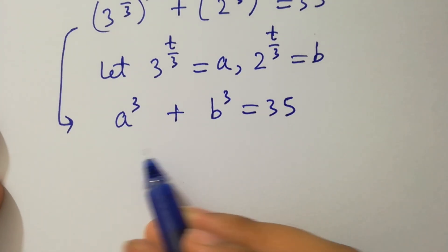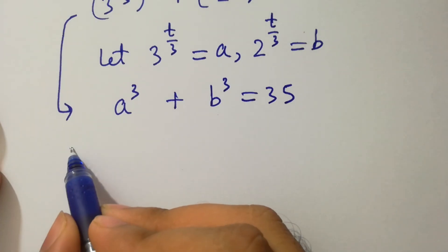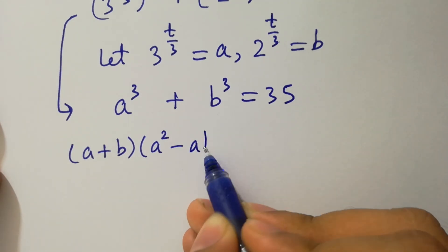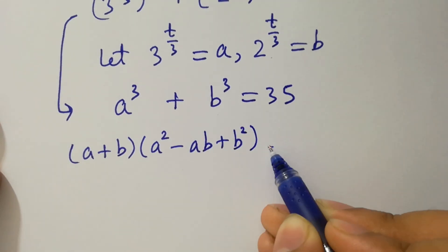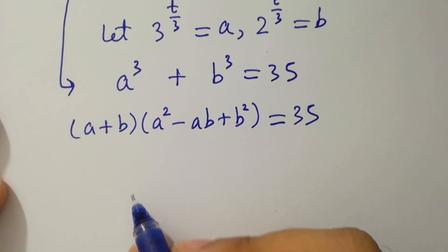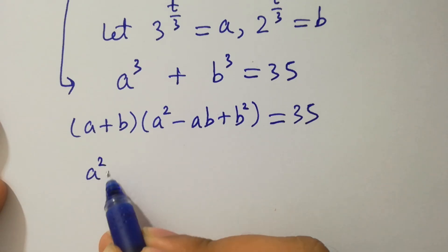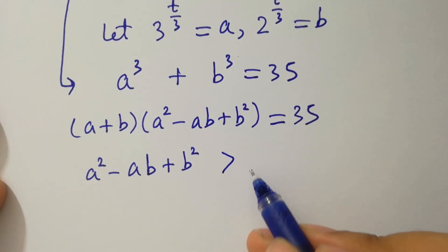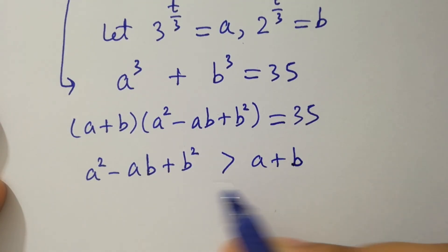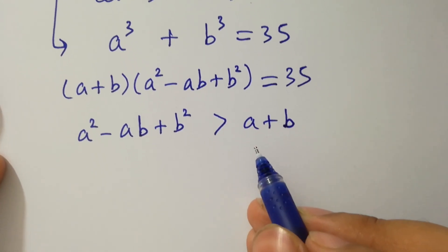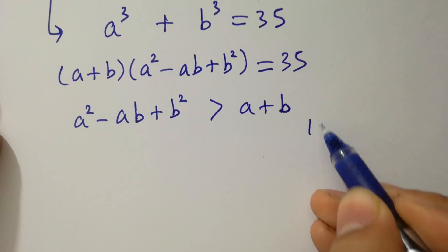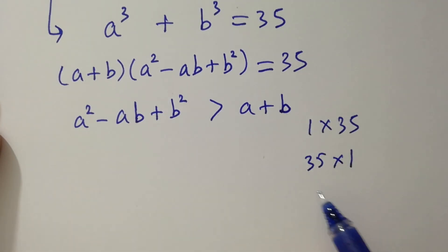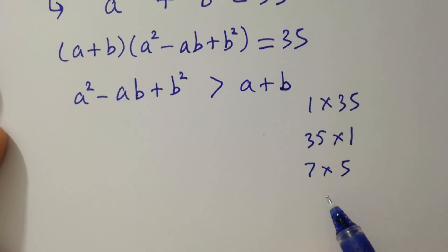Apply the formula for a cubed plus b cubed, which is a plus b, times a squared minus ab plus b squared. The product equals 35, so we consider the factor pairs of 35: 1 times 35, 35 times 1, 7 times 5, and 5 times 7.